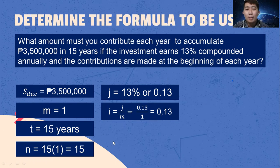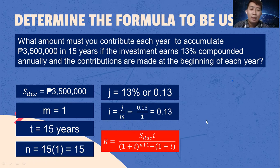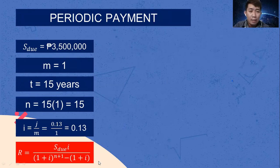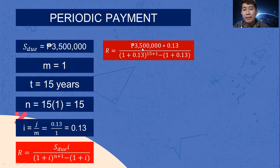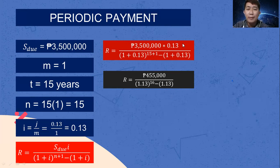Since the given is future value, we use this formula: periodic payment R equals future value of annuity due multiplied by i, over the quantity of (1 + i) raised to (n + 1) minus the quantity of (1 + i). Substituting: S due is 3,500,000, i is 0.13, and N is 15. We multiply 3,500,000 by 0.13 to get 455,000. We compute 1 + 0.13 = 1.13, and the exponent becomes 15 + 1 = 16.